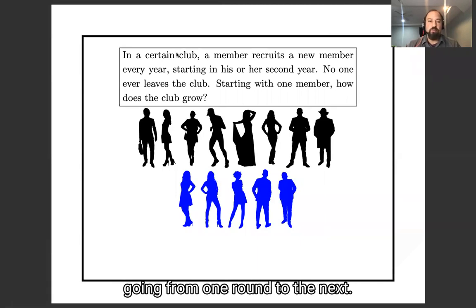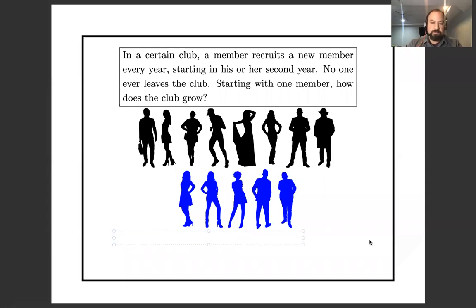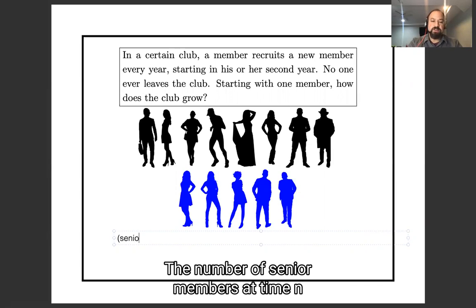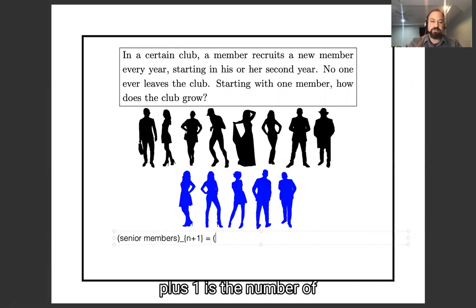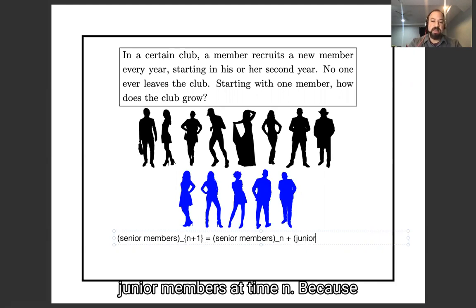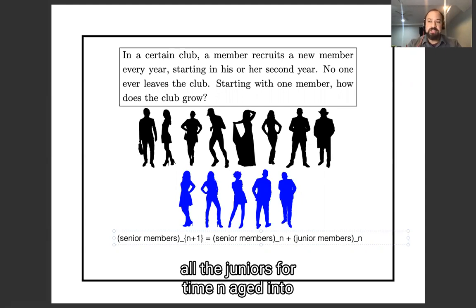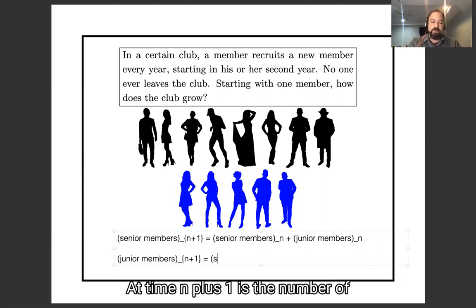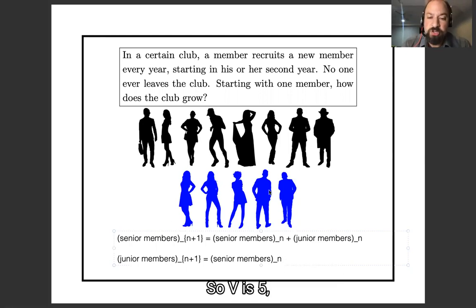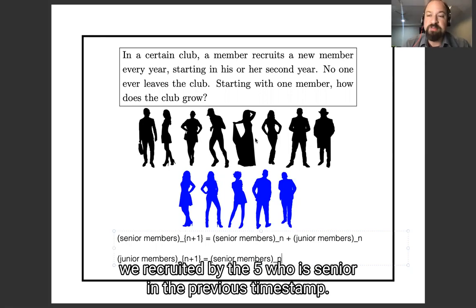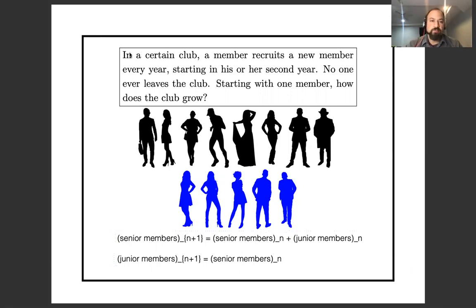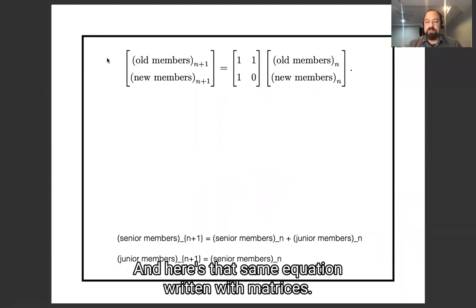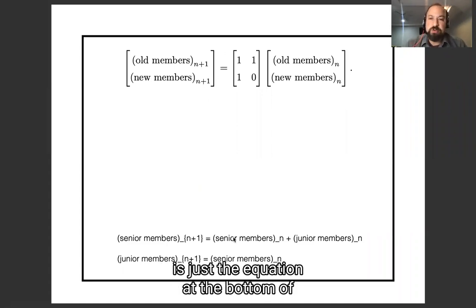If you look at what happens going from one round to the next, the number of senior members at time n+1 is the number of senior members at time n plus the number of junior members at time n. And the number of junior members at time n+1 is the number of senior members at time n because each senior member recruits a new junior member. Here's that same equation written with matrices.